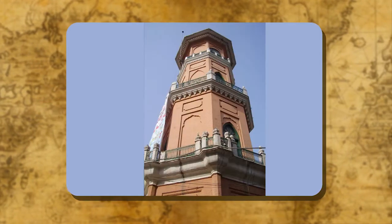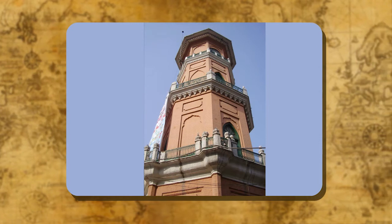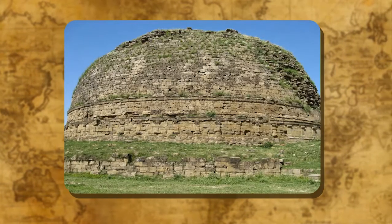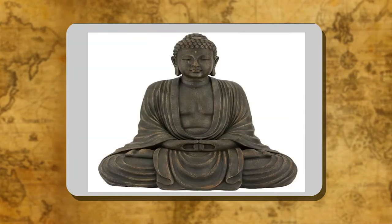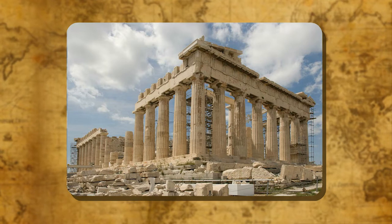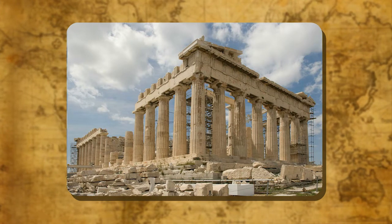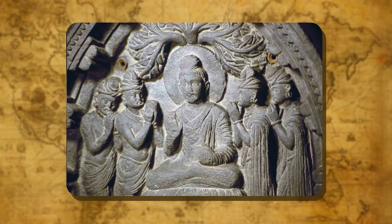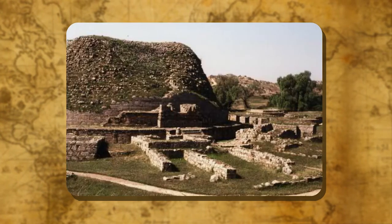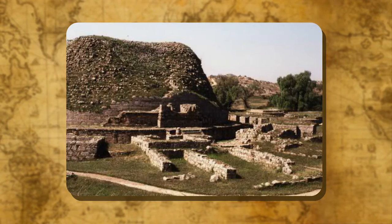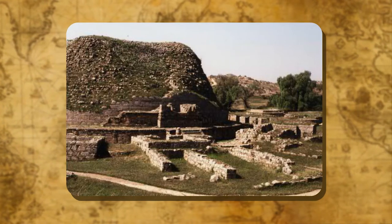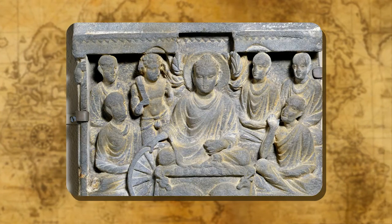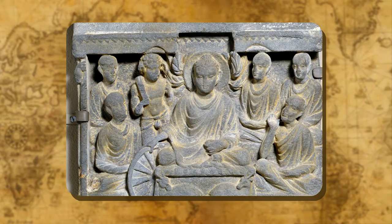Gandhara School of Art: Kanishka was a liberal patron of art. He built a lofty tower about 120 meters high in Peshawar, and also built fine buildings, monasteries, stupas, and sculptures at Peshawar and Takshila. He employed Greek and Roman artists who made images of Lord Buddha in large numbers, leading to a new school of art developed in the province of Gandhara in the north-west, known as the Gandhara School of Art. Its chief centres were at Peshawar and Takshila. The Gandhara art is also called Indo-Greek or Greco-Buddhist because the Greek style was applied to Buddhist subjects.